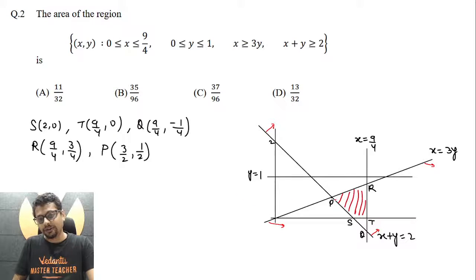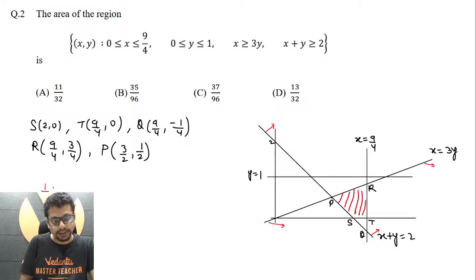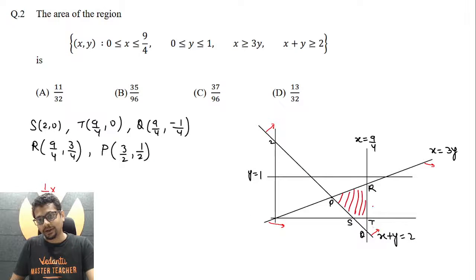Now what is the area of triangle P, Q, R? You may say it is half into base Q, R into height. Using x and y coordinates of these points, we can easily find all these things.